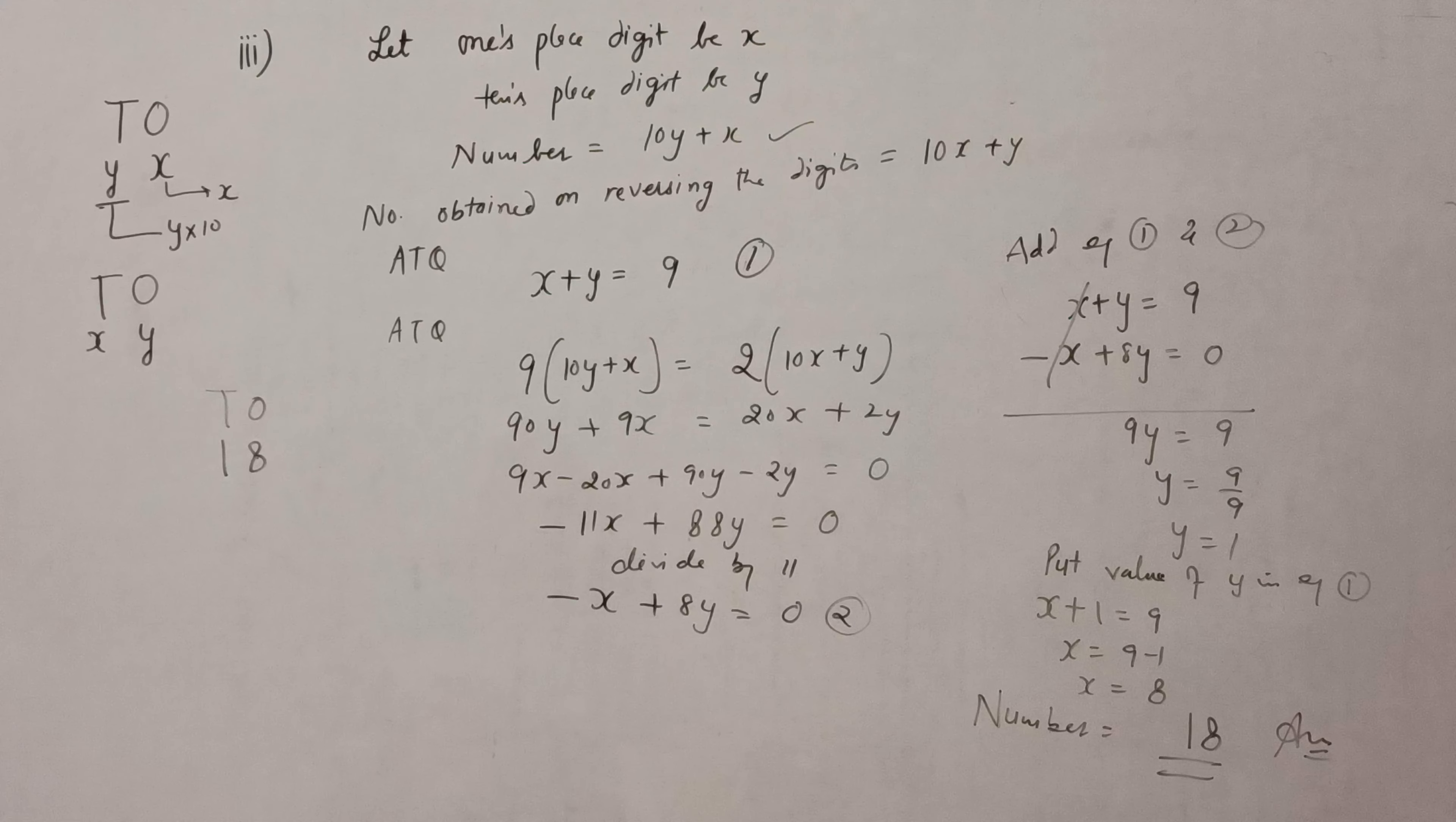Now it will be 90y plus 9x equals 20x plus 2y. So 9x minus 20x, 90y minus 2y is equal to 0. This will be minus 11x plus 88y equals 0. Divide by 11, so minus x plus 8y is equal to 0. So these are the two equations.